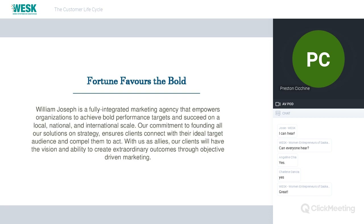At WJ, our positioning statement — which we craft for all our clients — is: William Joseph is a fully integrated marketing agency that empowers organizations to achieve bold performance targets and succeed on a local, national, and international scale. Our commitment to founding all solutions in strategy ensures clients connect with their ideal target audience and compels them to act. With us as allies, clients will have the vision and ability to create extraordinary outcomes through objective-driven marketing.